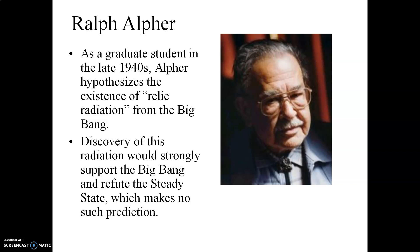Therefore, what should be the temperature of the universe today if it was cooling down from an initial hot point? He goes to his thesis advisor, a physicist named George Gamow, and says: I want to calculate out exactly how cool the universe should be right now if it began expanding from a hot, dense initial point. Gamow looks at the idea and says that's great, go ahead and work on that as your PhD project. Alpher works out all the mathematical details and ends up with a number of about three degrees above absolute zero, about three degrees Kelvin.